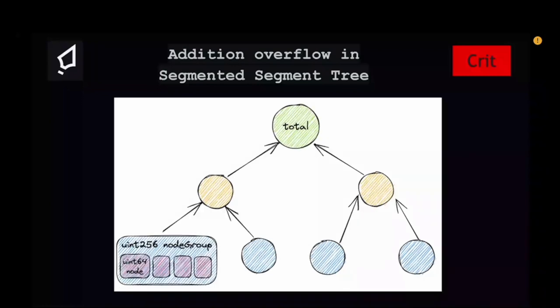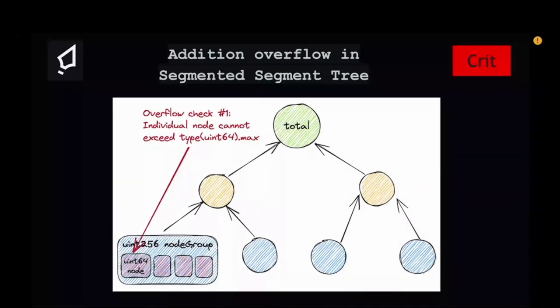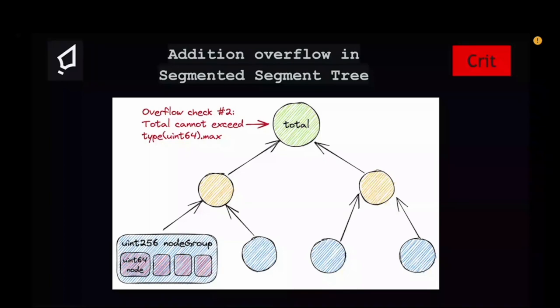Each node is a uint64, representing the liquidity amount for a single maker order. You can therefore store four nodes in a group, since each slot is uint256 (bytes32). The total is also kept as uint64. There were two overflow checks done: first, the individual maker order cannot exceed uint64.max; second, a check to ensure the total cannot exceed that number either. Looking at the code, you see node.get64 of the node plus add_clean — that's overflow check one. For overflow check two, you check whether the total would exceed the uint64 type and revert with a max error.